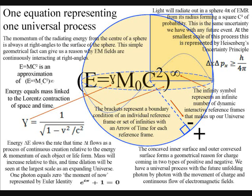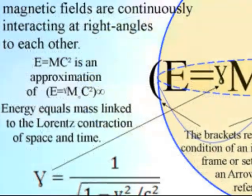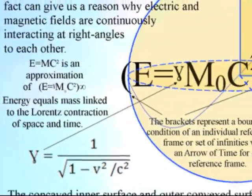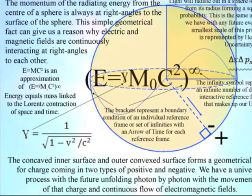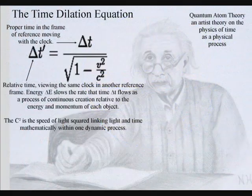This theory can be represented mathematically by just one equation with energy equals mass linked to the Lorentz contraction of space and time. The Lorentz contraction represents the time dilation of Einstein's theory of relativity.